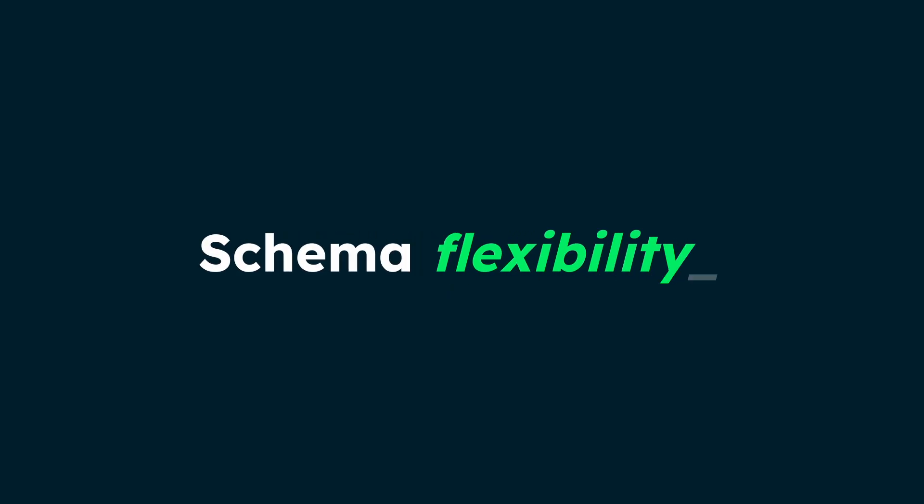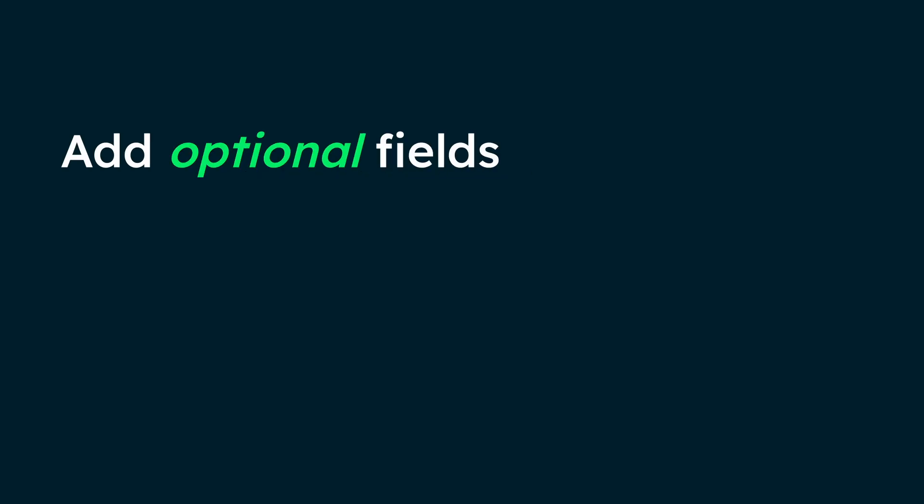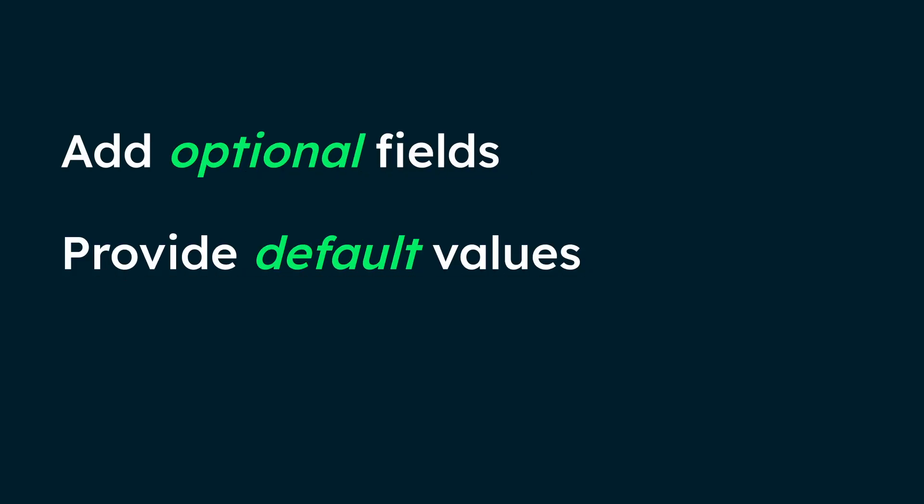How does Prisma handle MongoDB's schema flexibility? MongoDB's flexible schema works well for evolving applications. When using Prisma ORM with MongoDB, you can use several methods for schema evolution. New fields can be marked as optional to work with MongoDB's flexibility. Default values for new fields can be added when needed. Prisma ORM's DB push command creates collections and indexes based on your schema, but doesn't modify the existing document structures.